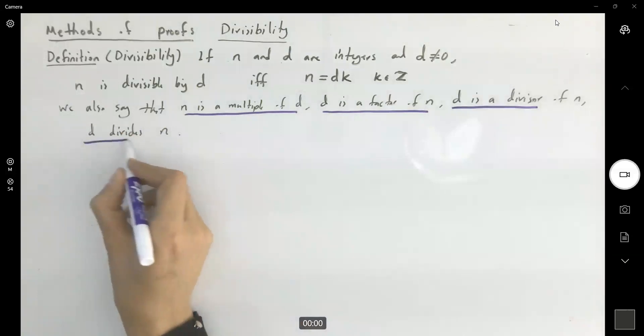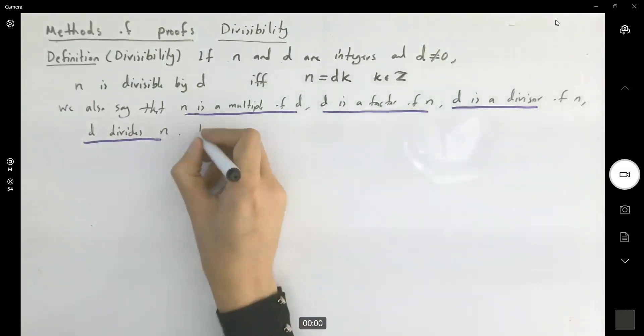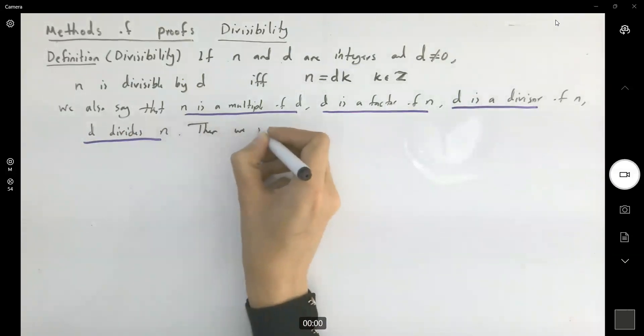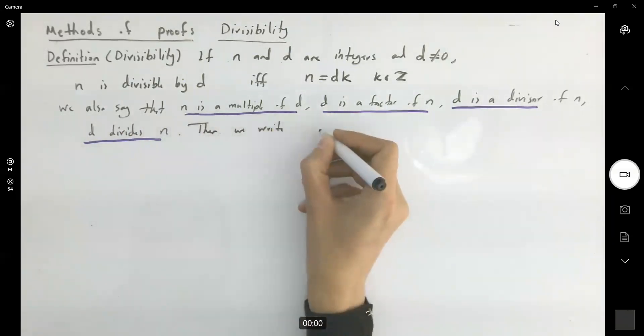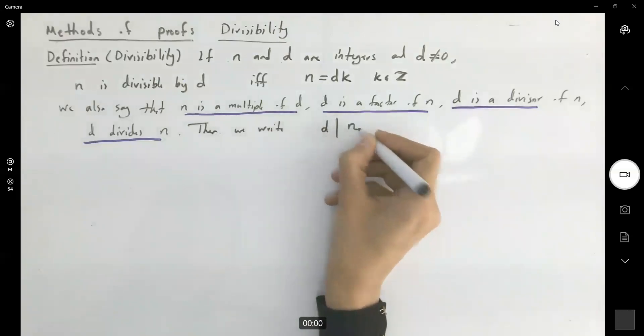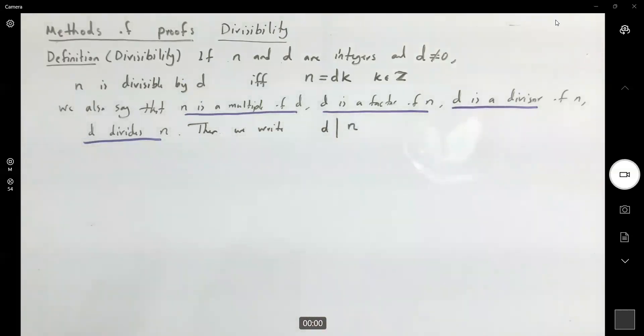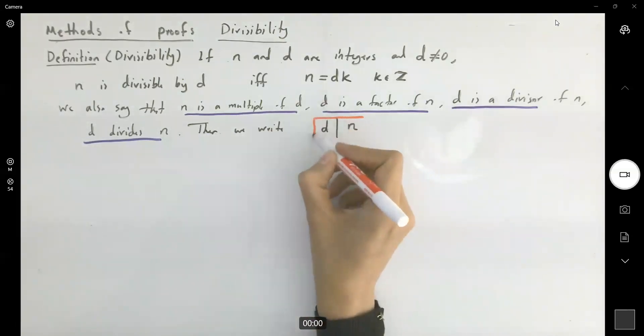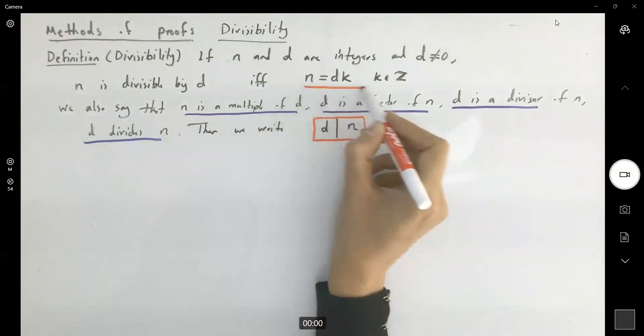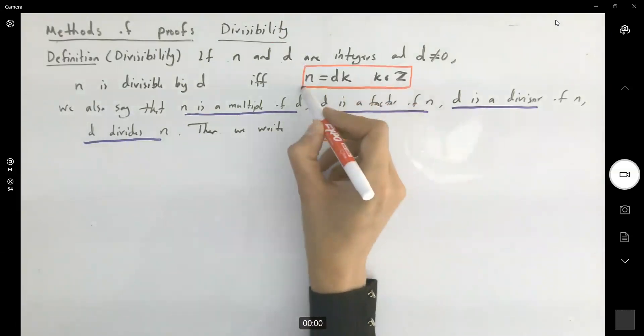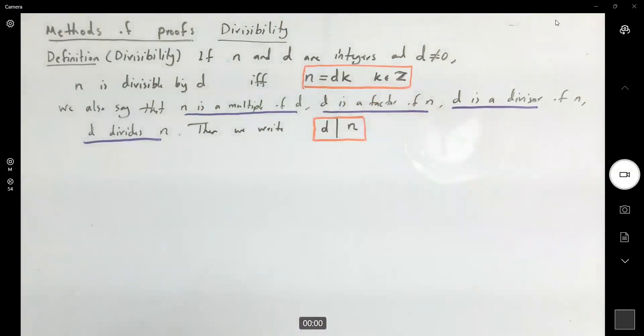In that case, we write d divides n. You're going to use this vertical line to show that d divides n, or n can be written as d times k, for k as an integer.